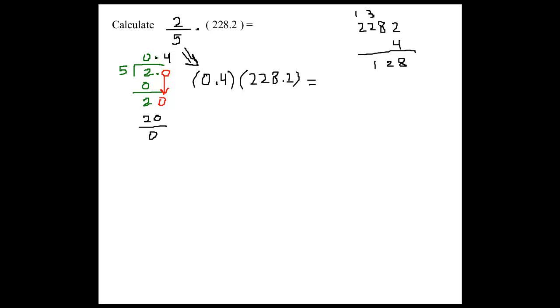2 times 4 is 8 plus 1 would be 9. So here we have 2 digits after this decimal point. So it means I have to move the decimal point to the left 2 digits. So this whole thing would be equal to 91.28.